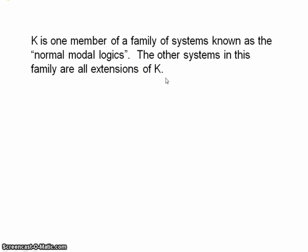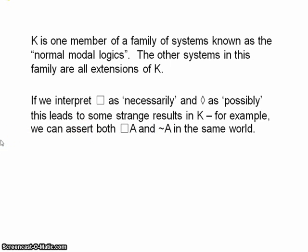Throughout these videos we've been interpreting the box as representing necessity, the diamond as representing possibility, and to provide the semantics for our logic we have been using this concept of possible worlds. But in the system K, some very strange things follow from this. The most notable one, which I mentioned in my video modal logic 1.3, is that in the system K, you can have both necessarily A and not A be true in the same world, which is pretty counterintuitive if you're interpreting the box as meaning necessarily.